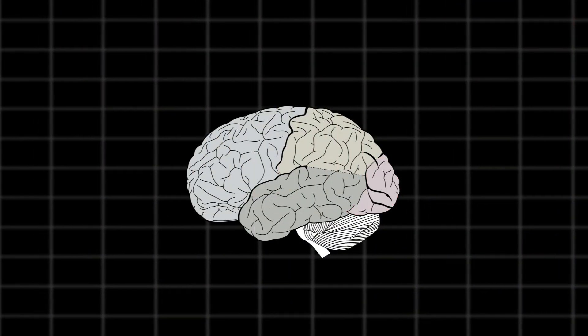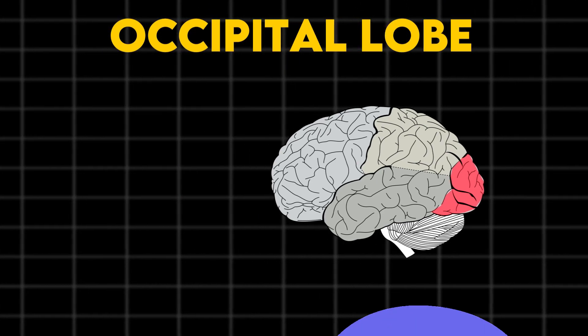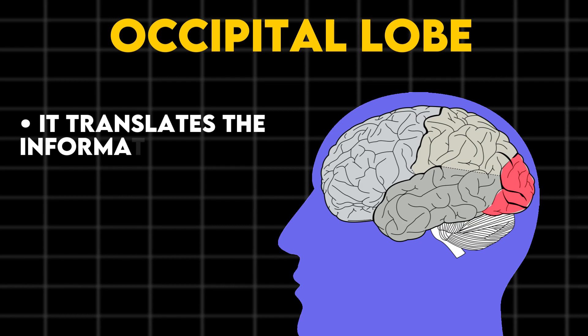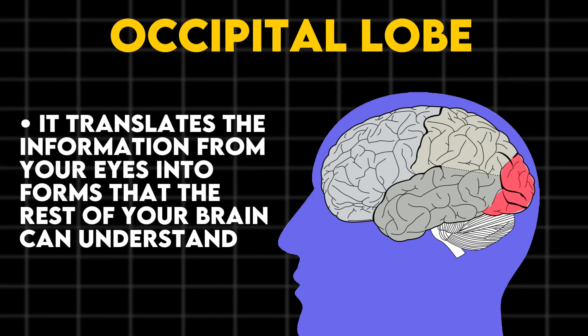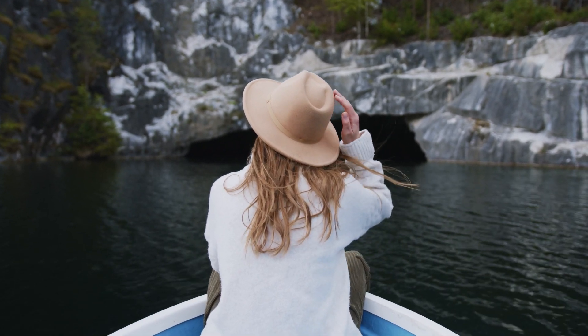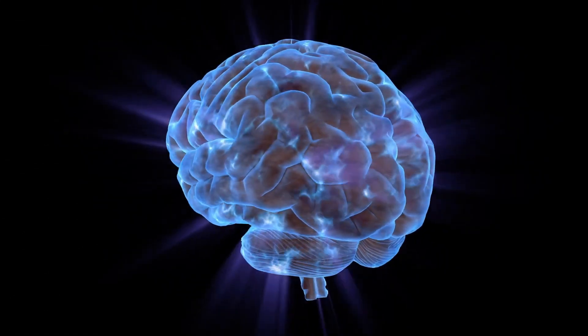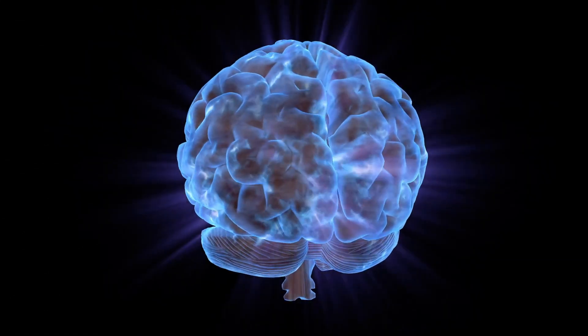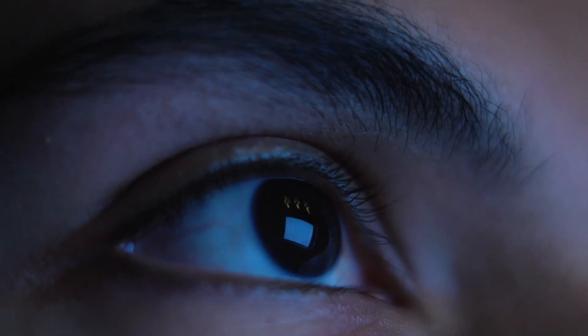And lastly, the back portion of the brain that controls vision is called the occipital lobe. Your occipital lobe's primary function is to translate the information from your eyes into forms that the rest of your brain can understand. For example, color processing, object and face recognition is done by using our eyes. Our eyes pick up what is visible in the environment and convert it into signals that are sent to our brain. However, the occipital lobe is what receives those signals and processes them.